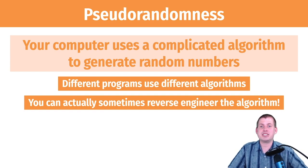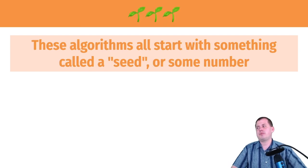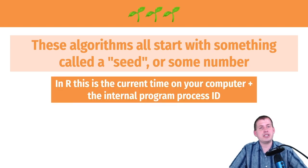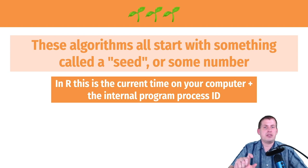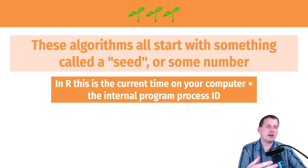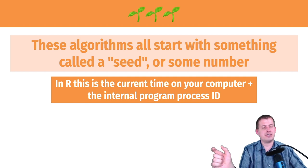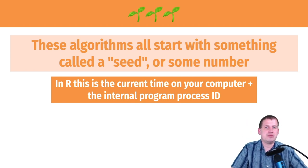All random number generating algorithms, including Excel's, start with something called a seed — just a number. In R, the seed is based on the current time on your computer combined with the process ID, which is the number your operating system assigns to every program when you open it. So it takes the current time, sticks it together with the process ID, and that becomes the seed.